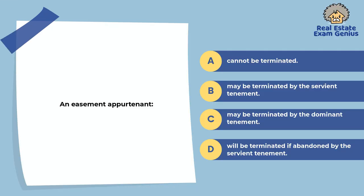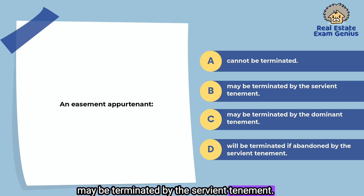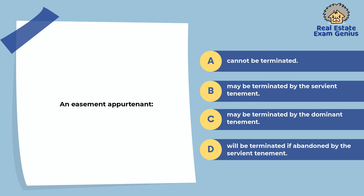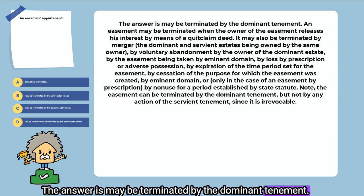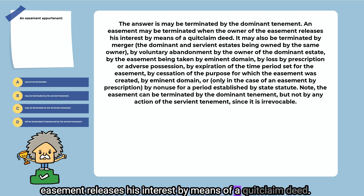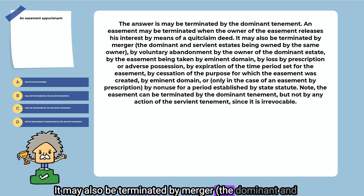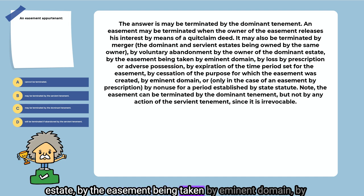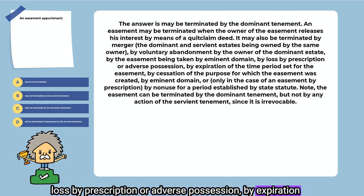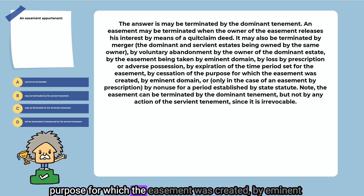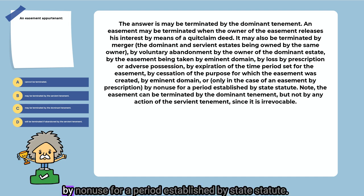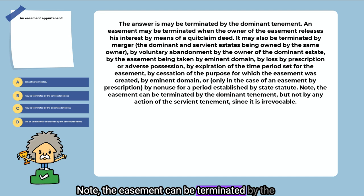An easement appurtenant: cannot be terminated, may be terminated by the servient tenement, may be terminated by the dominant tenement, or will be terminated if abandoned by the servient tenement. The answer is may be terminated by the dominant tenement. An easement may be terminated when the owner of the easement releases his interest by means of a quitclaim deed, by merger, by voluntary abandonment by the owner of the dominant estate, by eminent domain, by prescription or adverse possession, by expiration of the time period, by cessation of purpose, or by non-use for a period established by state statute. Note: the easement can be terminated by the dominant tenement but not by any action of the servient tenement, since it is irrevocable.